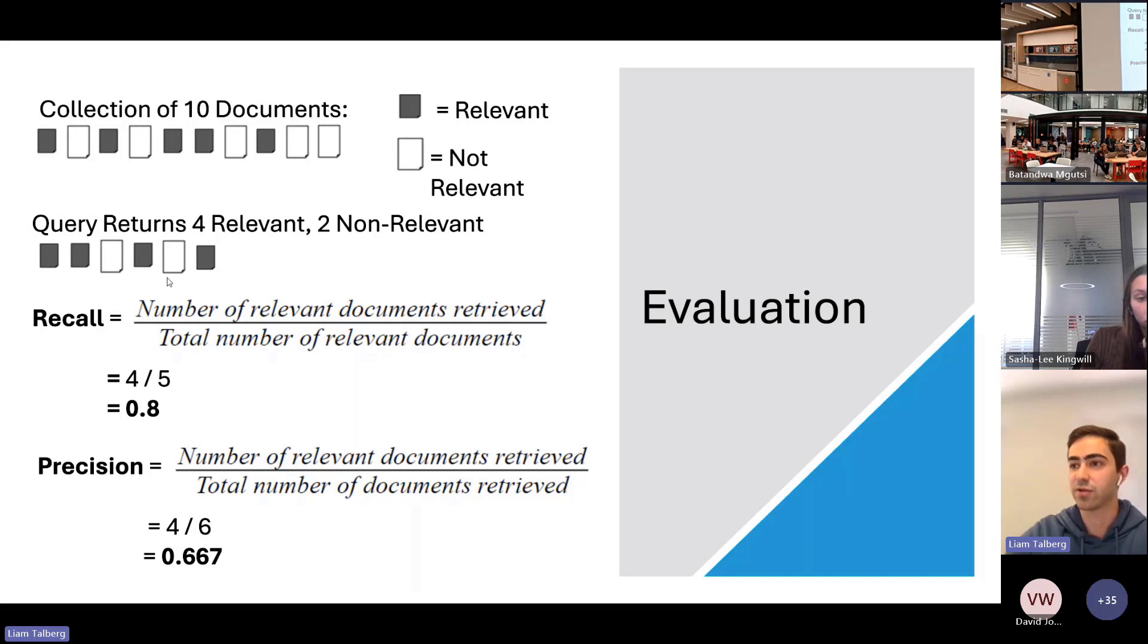Now we look at precision. For precision, we again take the number four, which is the relevant documents returned by a query. Instead, this time we divide by the number of documents which were returned by our query, which was six. This gives us a precision of 0.667 recurring. This tells us the precision of our search engine is not as good. This process can then be repeated for multiple queries to determine how accurate and precise our search engine is by looking at the average values. We can also actually look at the average values for the different number of search results to determine if our search engine is able to put the most relevant values first.